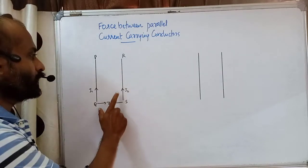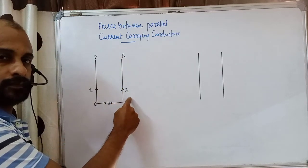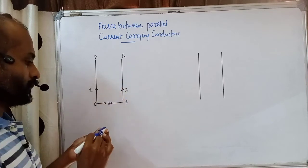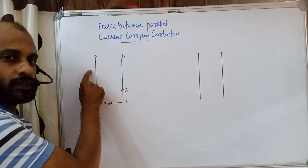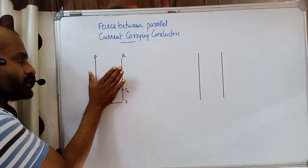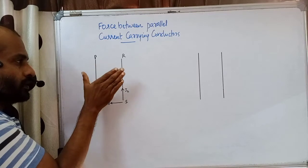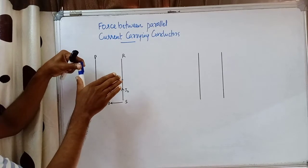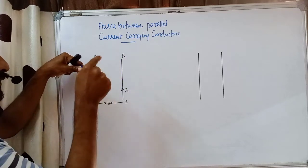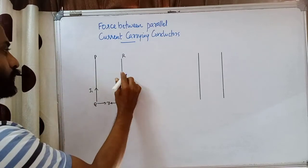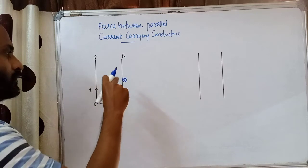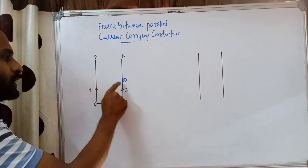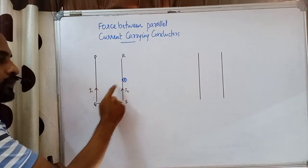Let us choose a point on conductor RS. Current flows upward through this conductor. By the right-hand thumb rule, if we place the thumb in the direction of current at this point, the magnetic field produced by PQ at this point on RS is directed inward — into the board. This point is at a distance r from conductor PQ.